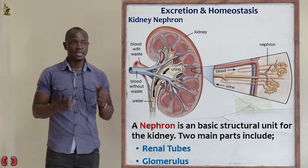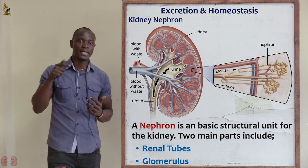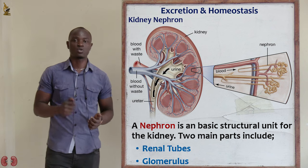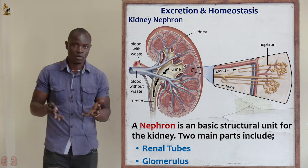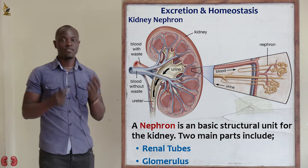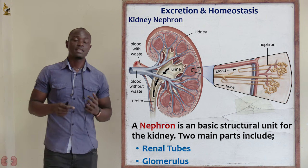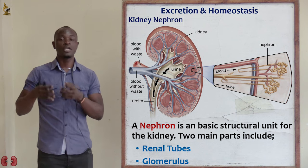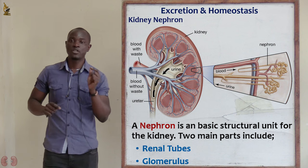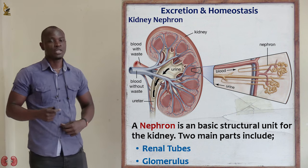Now getting to know the structure of the kidney, let's enter into the kidney and look at the structures referred to as nephrons. Nephrons are the basic functional units of a kidney — that is the definition of a nephron.